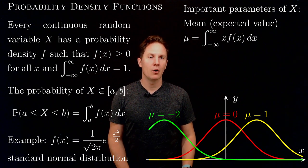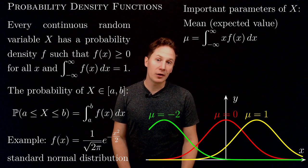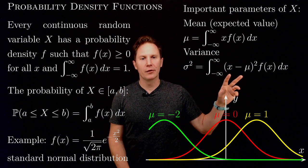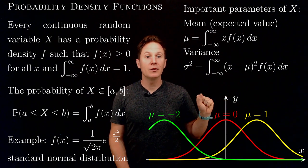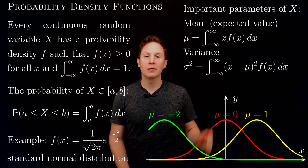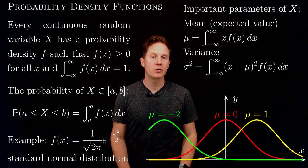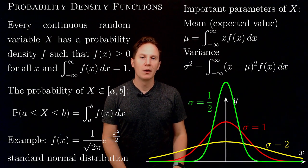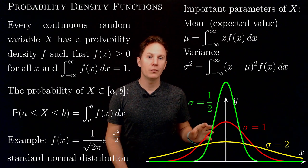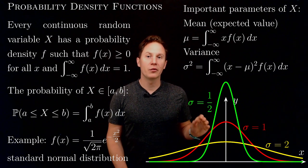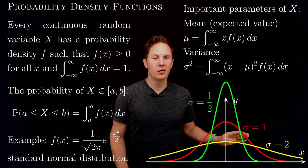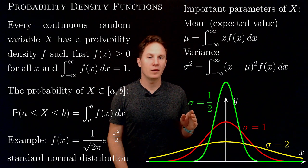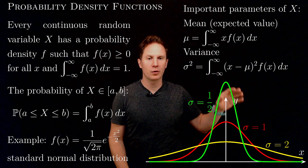Another important property is the variance, or squared standard deviation. You obtain it by subtracting the mean from x, squaring x minus mu, and then integrating that square times f of x dx from negative infinity to infinity. The variance roughly gives you how much the probability density is spread out around the mean. Here are some normal distributions with different variance and standard deviation — they all have mean zero, but as sigma goes from one to two it spreads out, and halving sigma gives a much more concentrated density.